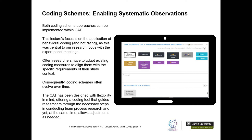Both coding scheme approaches can be implemented within the CAT. However, this lecture focuses on the application of behavioural coding, not rating, as behavioural coding was central to our research focus with the expert panel meetings. Researchers often have to adapt existing coding measures to align with specific requirements of their study — a coding system developed for student laboratory teams may not be well suited to capturing behaviours in organisational teams. Consequently, coding schemes often evolve over time as they're refined for specific sample populations.